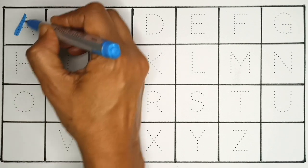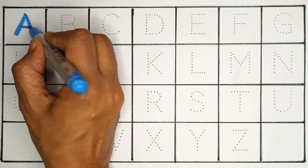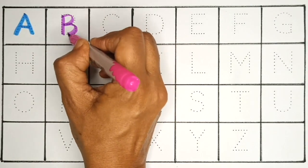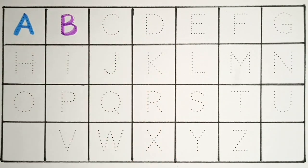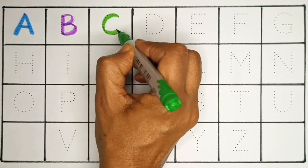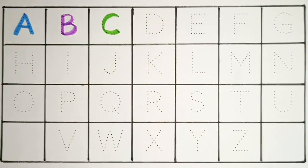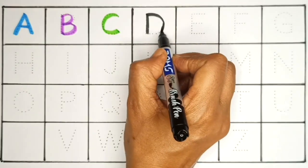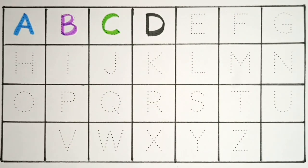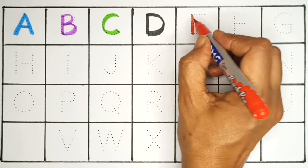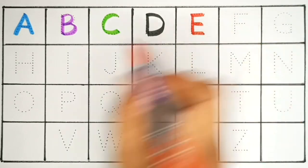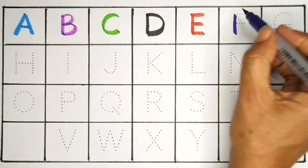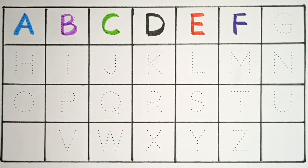A. A for apple. B. B for ball. C. C for cat. D. D for dog. E. E for elephant. F. F for fish.